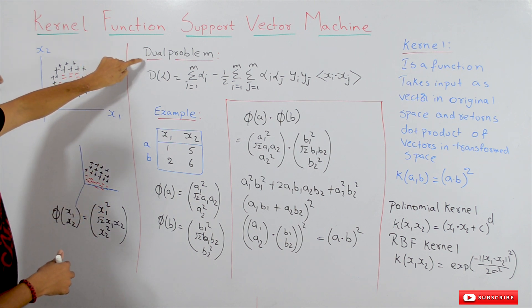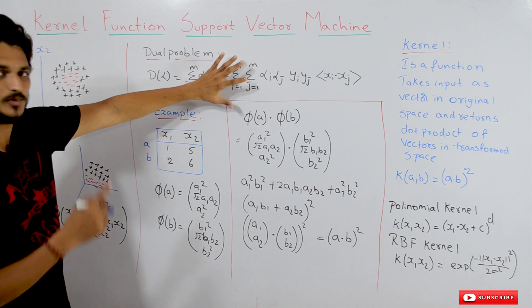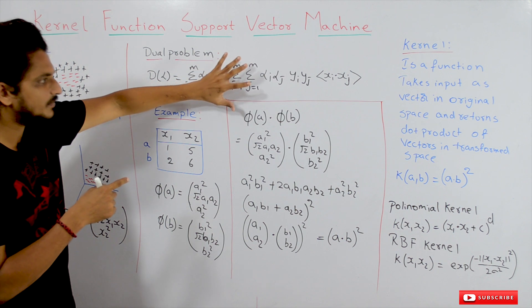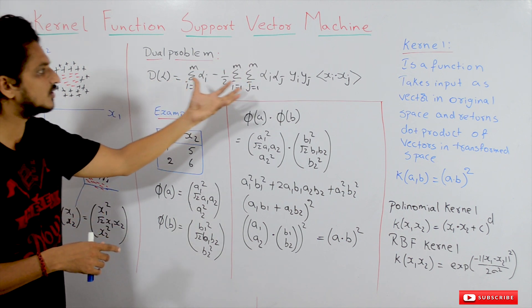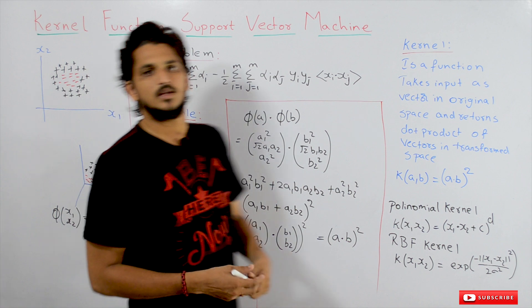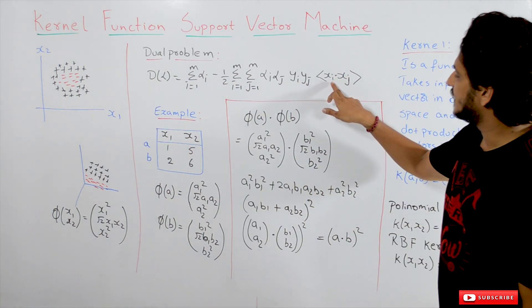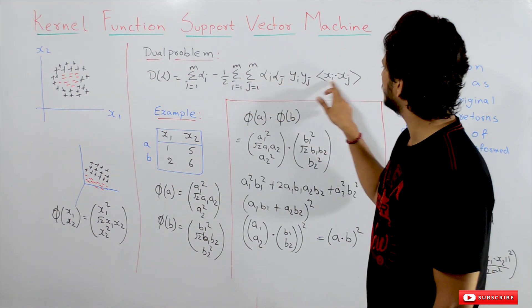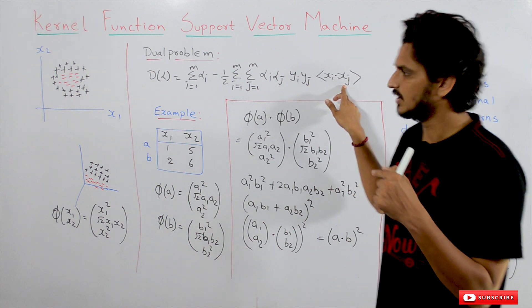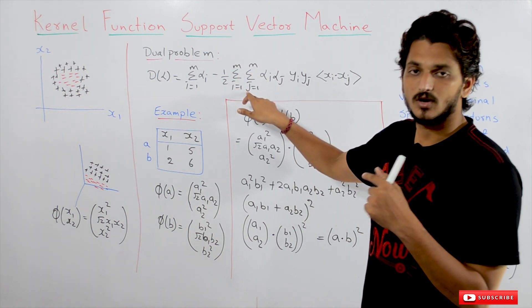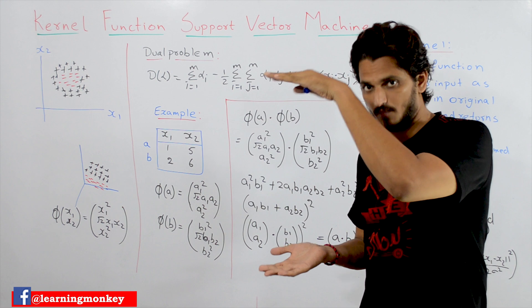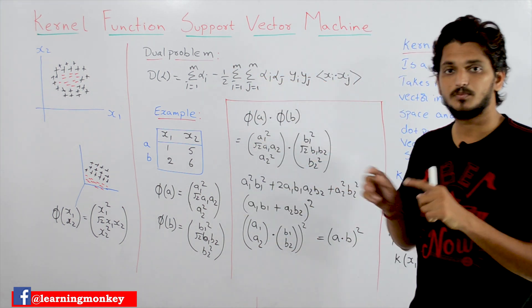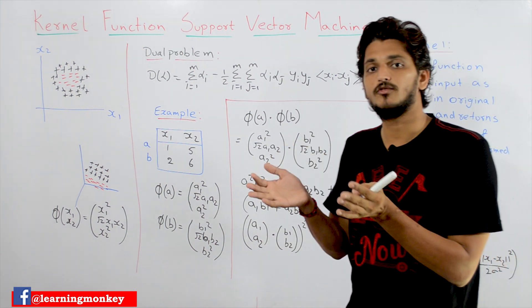The concept we already discussed is the dual problem — this is the optimization problem. The dual problem which we discussed in solving the optimization problem: we are identifying alpha values based on this function. The important point to understand here is xi dot xj, where i goes from 1 to m and j goes from 1 to m. xi means inputs; with m data points in our training data set, this means the pairwise dot product of input data.